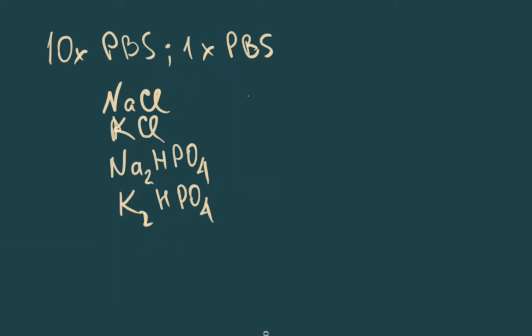The first one we need 8 grams per liter, potassium chloride we need 0.2 grams per liter, sodium phosphate we need 1.44 grams per liter, and potassium hydrophosphate we need 0.24 grams per liter.